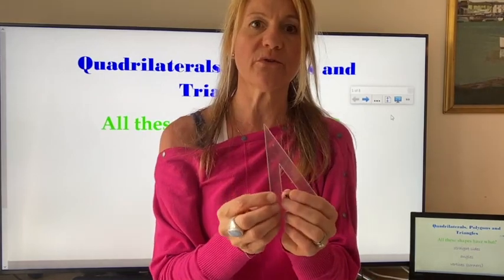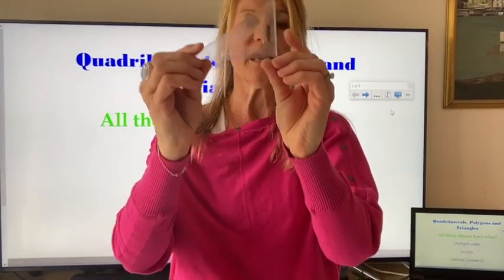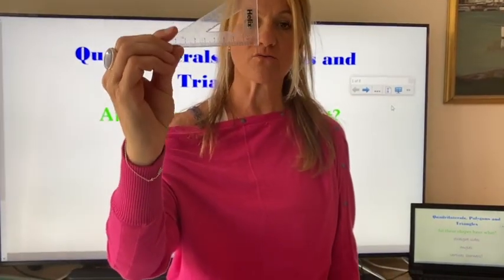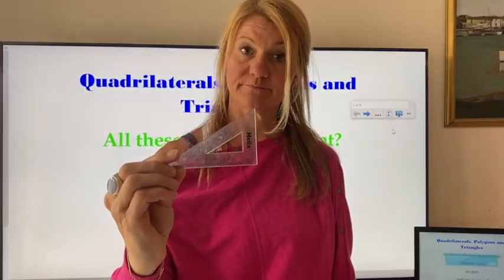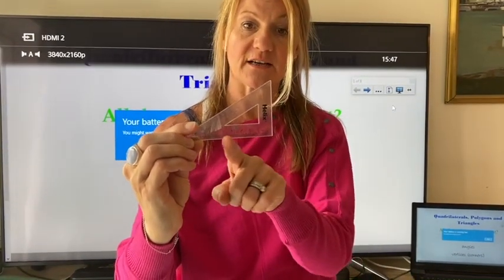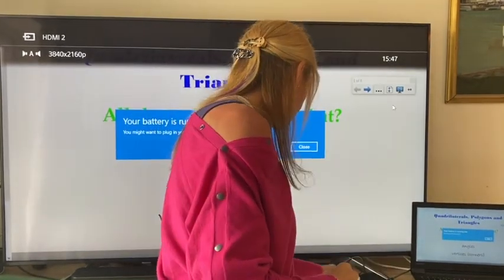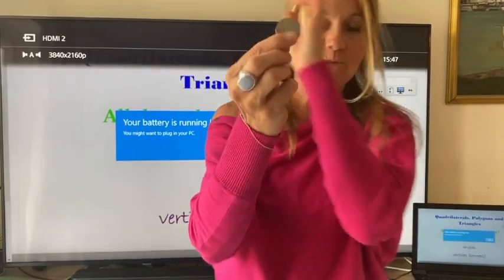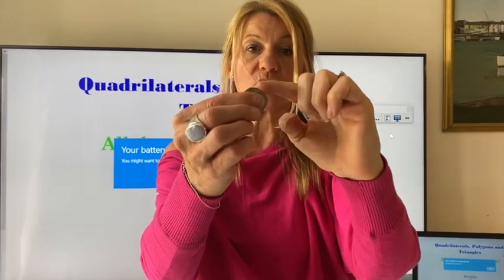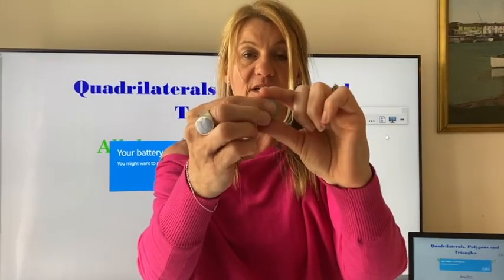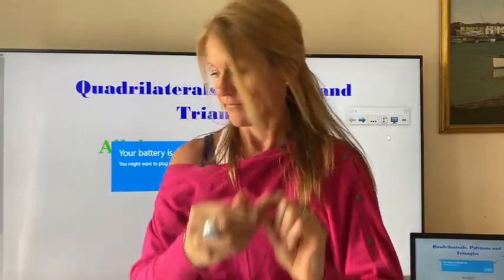This is also a trapezium. Two parallel sides, two that are not parallel. And finally, actually no, not finally, we've got another one after this. This was a right angled triangle. There's the right angle. Three sides, triangle, right angled triangle. Nearly forgot. What's this one? 50 pence piece. Yes, it is a regular heptagon. Regular because all of the sides are the same length. Excellent.